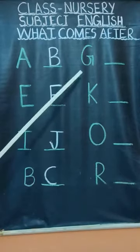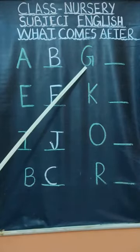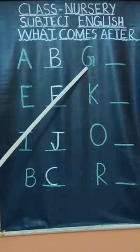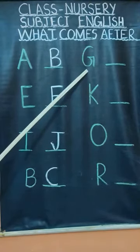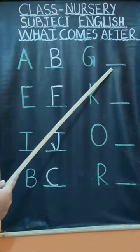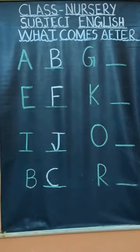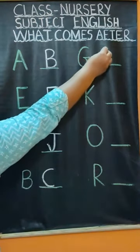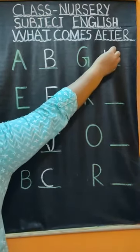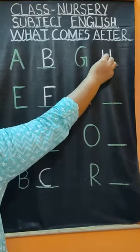Now children, tell me, what is this? Yes, very good — G. And what comes after G? Good. So you will write H on the blank space.